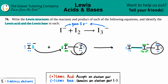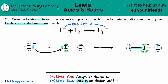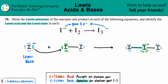A Lewis base is always the one that donates the electron pair. Since I⁻ had that electron pair and donated it — and now it's a bond — that had to be the Lewis base. Keep in mind: if you see a negative charge on the reactant side, chances are it's going to be the Lewis base. The other one then has to be the Lewis acid. You can't have two Lewis bases or two Lewis acids. The Lewis acid is always the one that accepts the electron pair — in this case, that iodine accepted the bond.